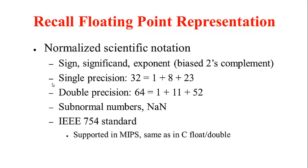This representation also supports subnormal numbers — that is, numbers between 0 and the smallest number possible with the smallest exponent — and special bit patterns for NaN, or not a number. Floating point numbers in MIPS use this IEEE 754 standard, the same standard used in C. The float type in C is the single precision version and the double type is the double precision version. Both are supported in MIPS.